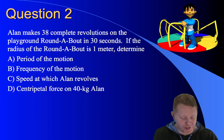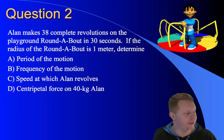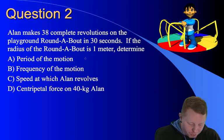Alan makes 38 complete revolutions on the playground roundabout in 30 seconds. If the radius of the roundabout is one meter, find its period, frequency, the speed at which Alan revolves, and the centripetal force on Alan. Well, we'll start with the period.